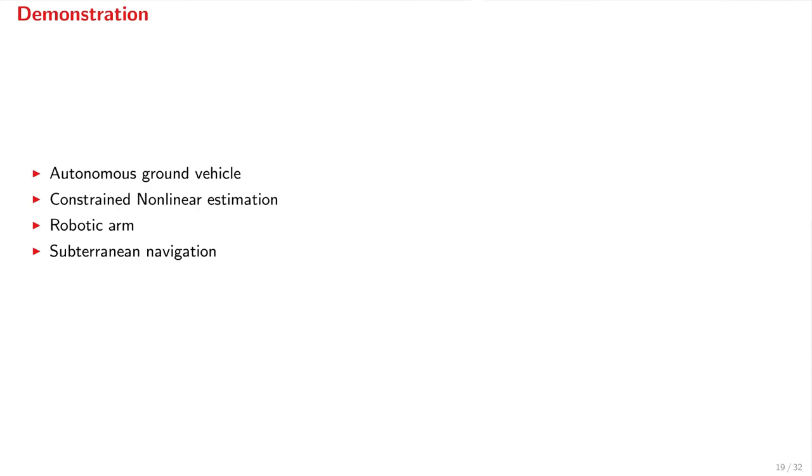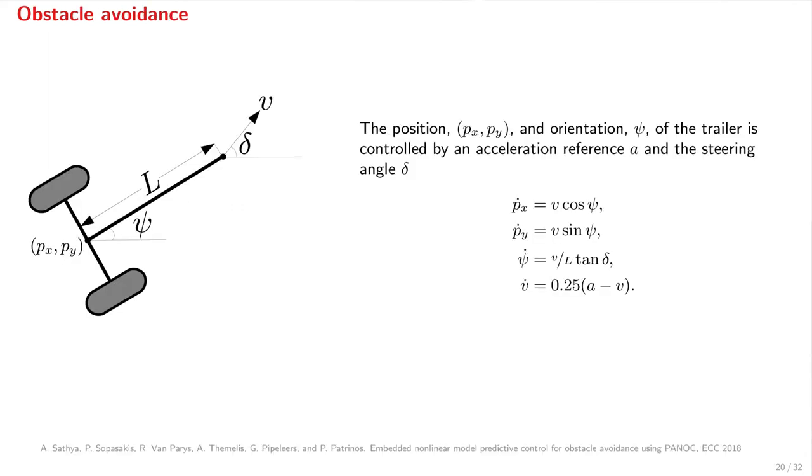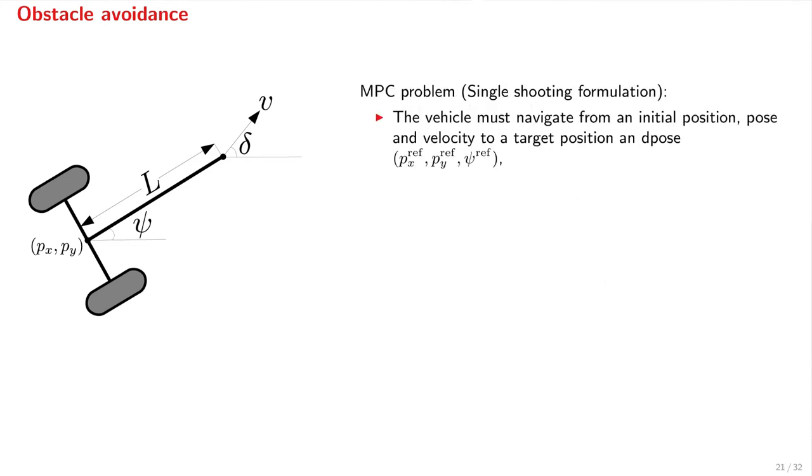Let us now have a look at some simulations. I will walk you through four examples. An autonomous ground vehicle, a problem of constrained nonlinear estimation of a chaotic system, a four-link robotic arm, and a subterranean navigation experiment. We start with the design of a model predictive controller for a ground vehicle tugging a trailer in an obstructed environment. The position px, py, and orientation psi of the trailer is controlled by an acceleration reference a, and the steering angle delta.